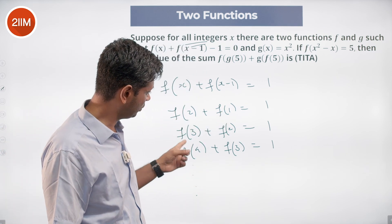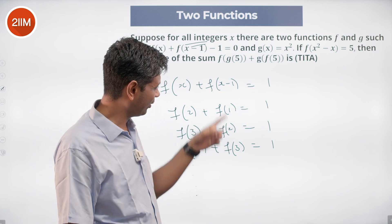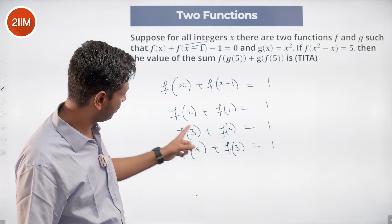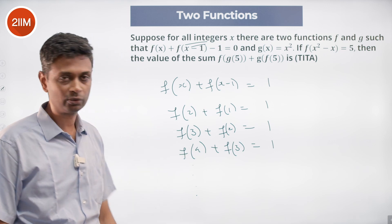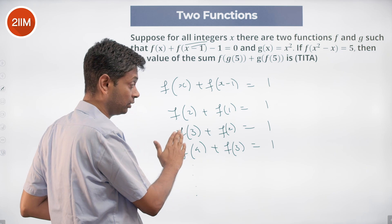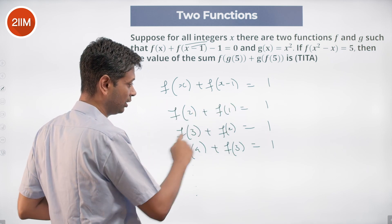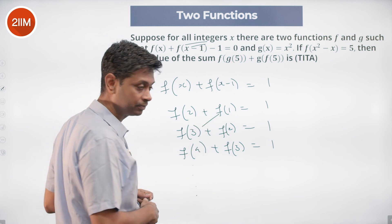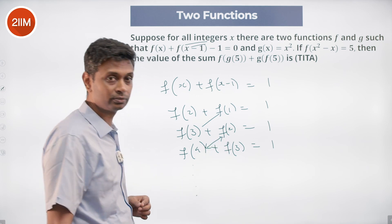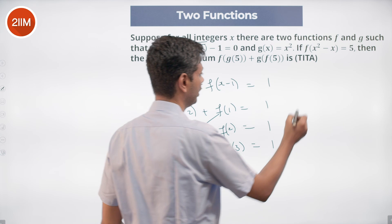Both f(2)+f(1) and f(3)+f(2) have f(2) in common and both equal 1, so f(1) = f(3). Both f(3)+f(2) and f(4)+f(3) share f(3), so f(2) = f(4). Extrapolating this pattern beautifully gives us a wonderful result.